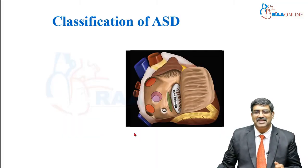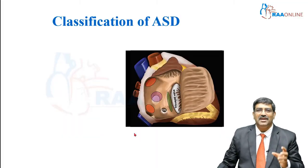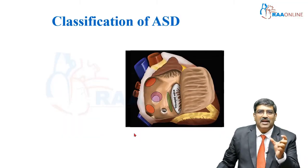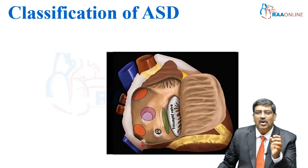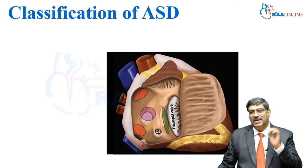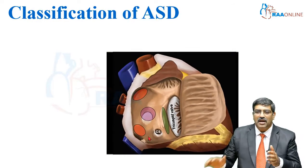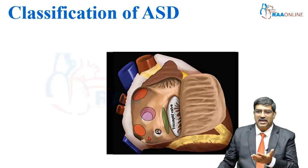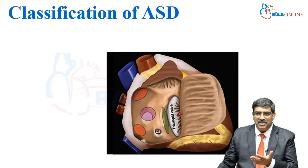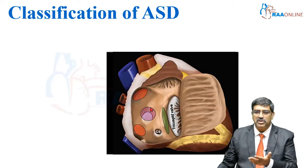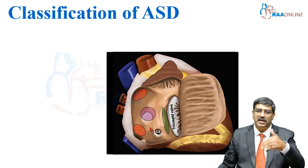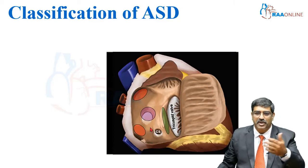Coming to the classification. Normally the classification of ASD is based on the location of the ASD. This is from the right atrial side. Here you can see the right atrium is open and you are approaching the septum from the right atrium, and the left atrium is behind this septum.